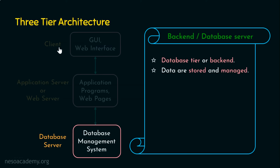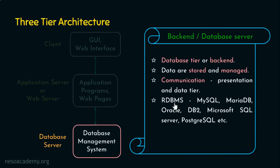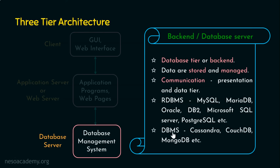In a two-tier architecture, the client or presentation tier communicates directly with the database tier, because only two tiers exist. But in three-tier architecture, direct communication between the presentation tier and data tier is not possible — it goes through the APIs of the application. Software tools include RDBMS technologies like MySQL, MariaDB, Oracle, DB2, Microsoft SQL Server, PostgreSQL, etc., and DBMS technologies like Cassandra, CouchDB, MongoDB, etc.